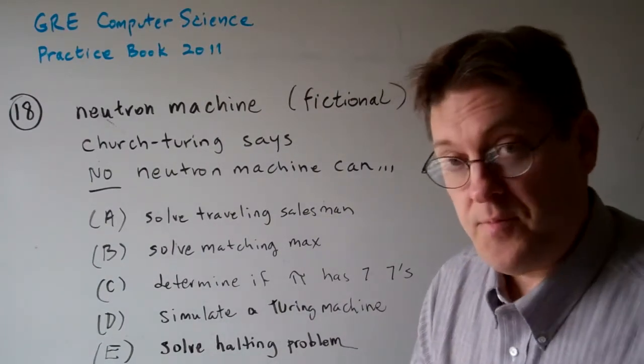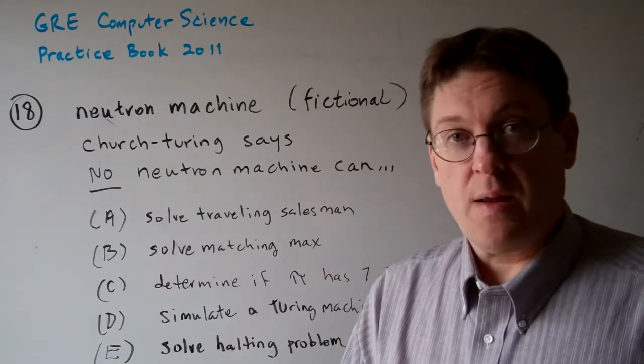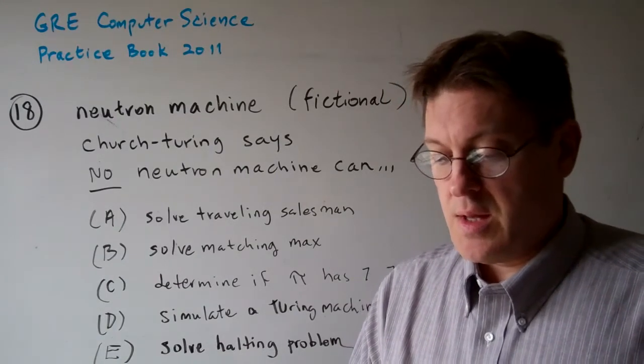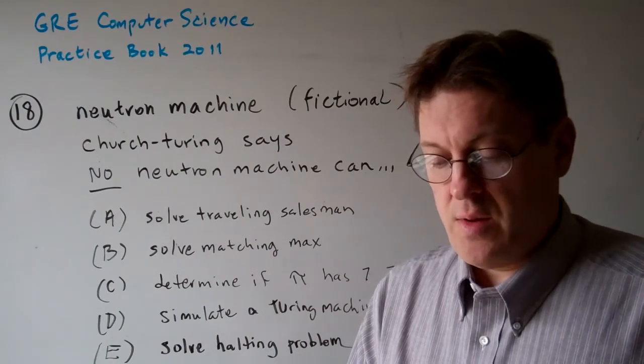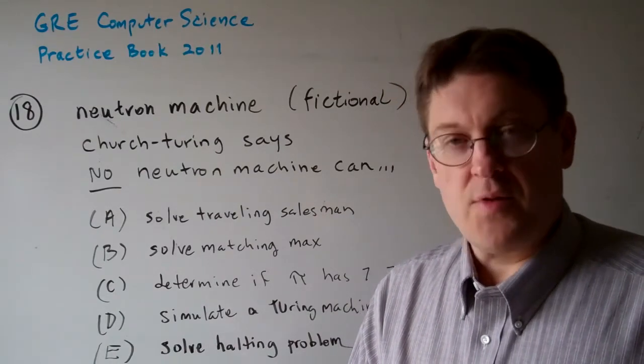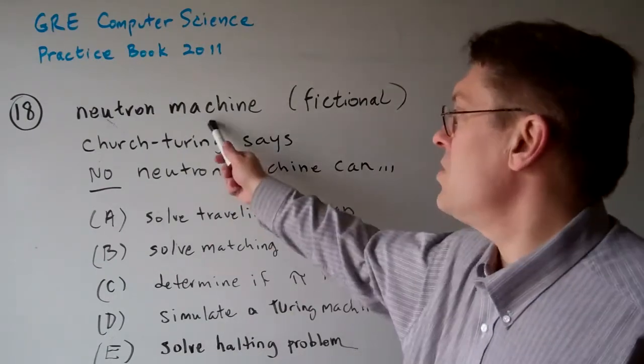Question 18. Suppose that Professor X develops a new model of computation called a neutron machine. Which of the following would be a consequence of the Church-Turing thesis? So we have this neutron machine.